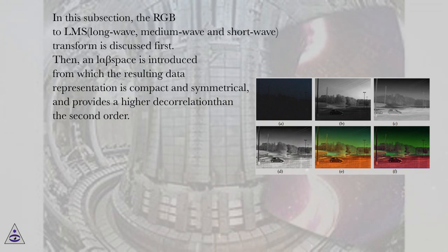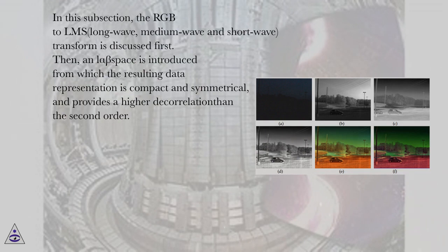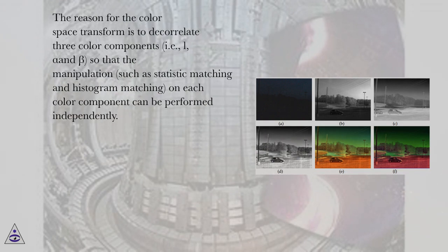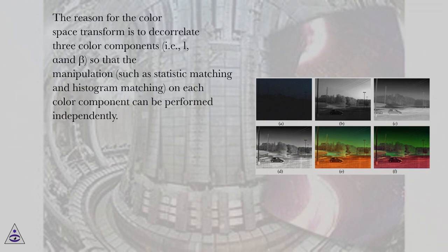In this subsection, the RGB to LMS (long wave, medium wave and short wave) transform is discussed first. Then, an L-alpha-beta space is introduced, from which the resulting data representation is compact and symmetrical, and provides a higher decorrelation than the second order. The reason for the color space transform is to decorrelate the three color components, i.e., L, alpha and beta, so that manipulation such as statistic matching and histogram matching on each color component can be performed independently.